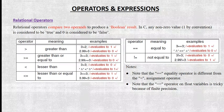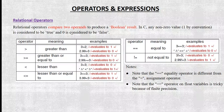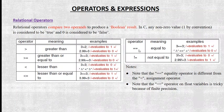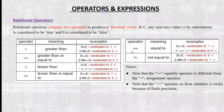Next we have relational operators, used to compare two values. The result is a boolean — true or false. The relational operators are: greater than (>), greater than or equal (>=), less than (<), less than or equal (<=), equal to (==), and not equal (!=). Important: the equality check uses two equal signs (==), while a single equal sign (=) is the assignment operator.